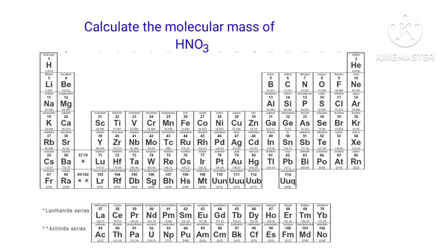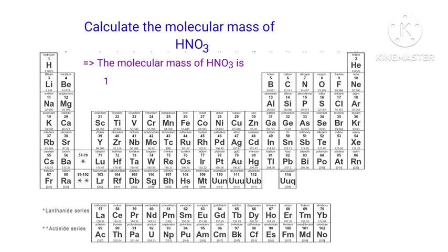In HNO3 there are 1 hydrogen atom, 1 nitrogen atom, and 3 oxygen atoms present. So the molecular mass of HNO3 is 1.0079 plus 14.007 plus 15.999 into 3, that is equal to 63.019 grams per mole.